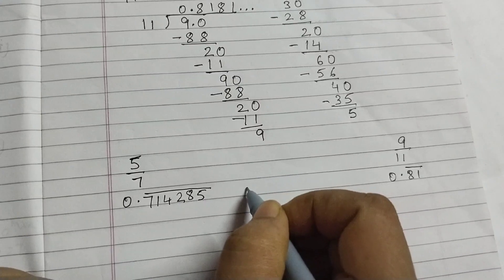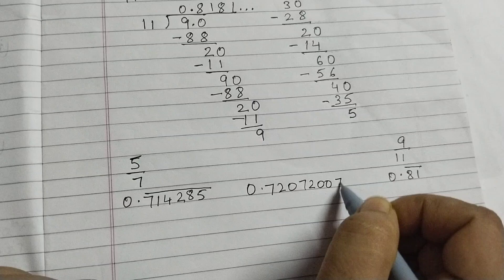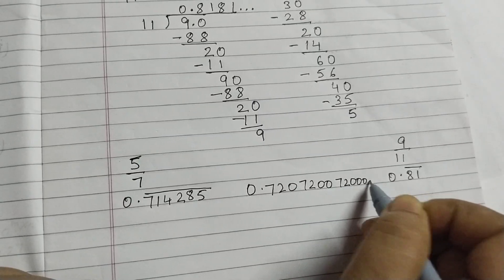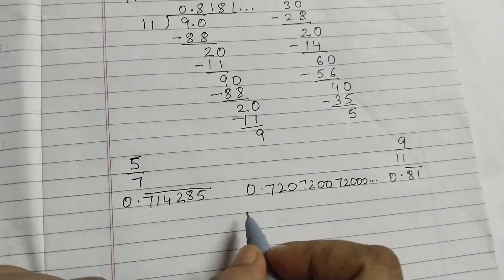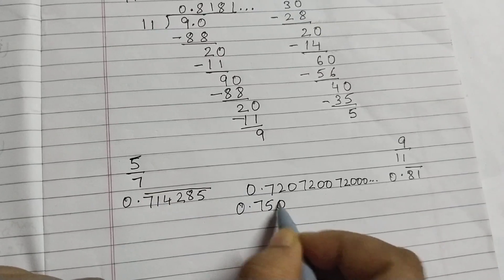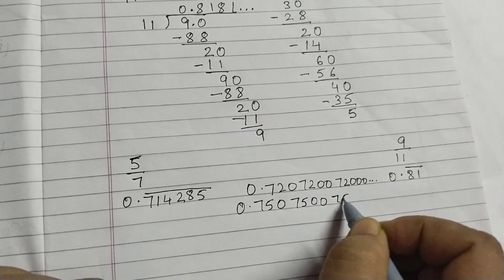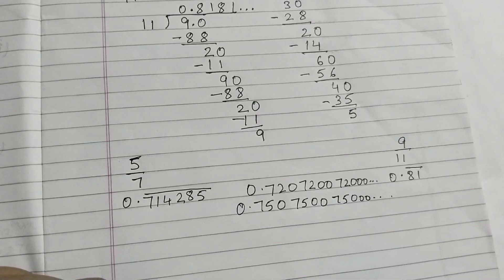0.720, 7200, 7200, 7200, dot, dot, dot. This could be one number. Next one is 0.7510, 7200, 7200, dot, dot, dot.